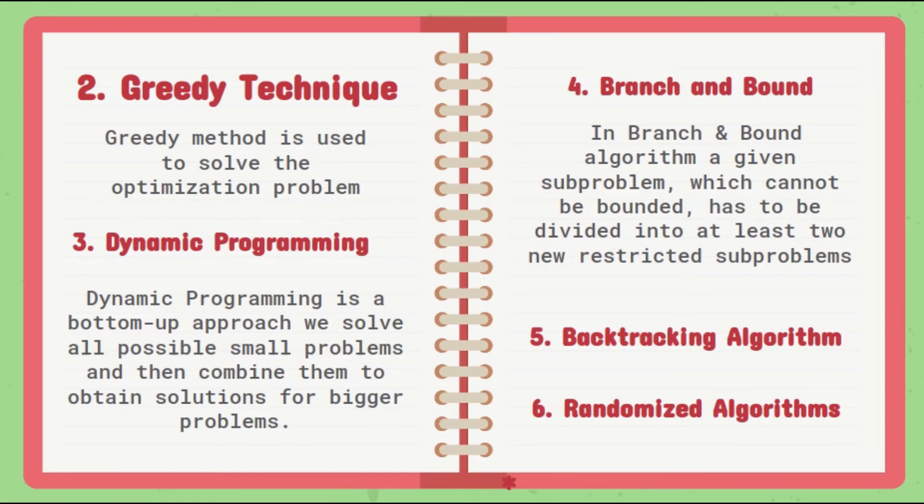The sixth one is the backtracking algorithm. Backtracking algorithm tries each possibility until it finds the right one. It is a depth-first search of the set of possible solutions. During the search, if an alternative doesn't work, then backtrack to the choice point—the place which presented different alternatives—and try the next alternative. That's what we can say about the backtracking algorithm.